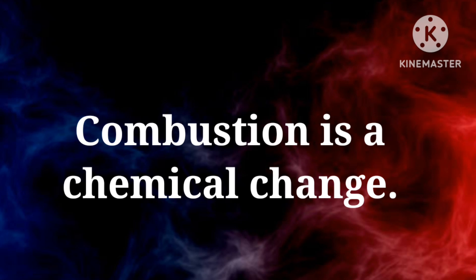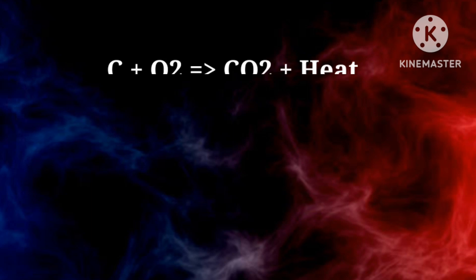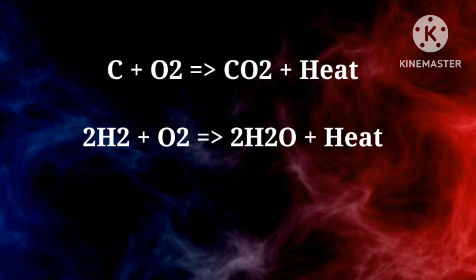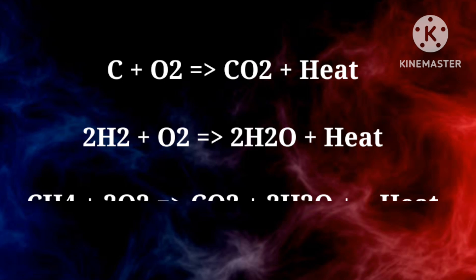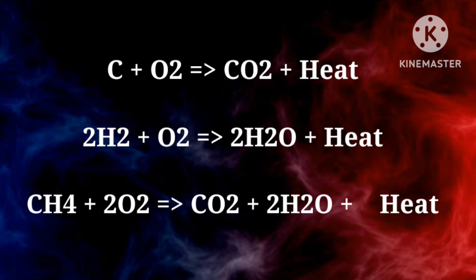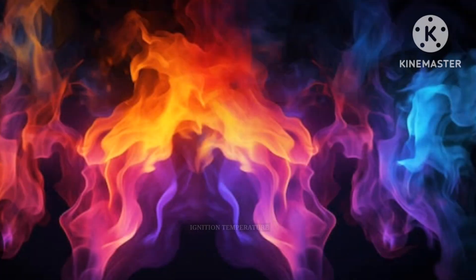Coal reacts with oxygen to form carbon dioxide: C + O2 = CO2 + heat. Hydrogen reacts with oxygen to form water: 2H2 + O2 = 2H2O + heat. Natural gas and biogas contain methane, which burns to produce carbon dioxide and water: CH4 + 2O2 = CO2 + 2H2O + heat.